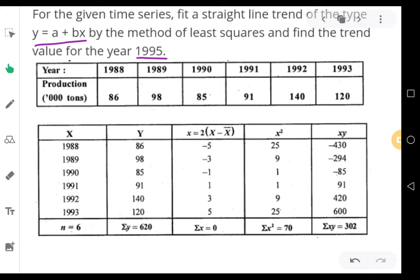In the question, they have given the years and production from 1988: 88, 89, 90, 91, 92, 93. And they have given the production data also: 86, 98, 85, 91, 140, and 120 tons. For this, we are proceeding to solve the sum.